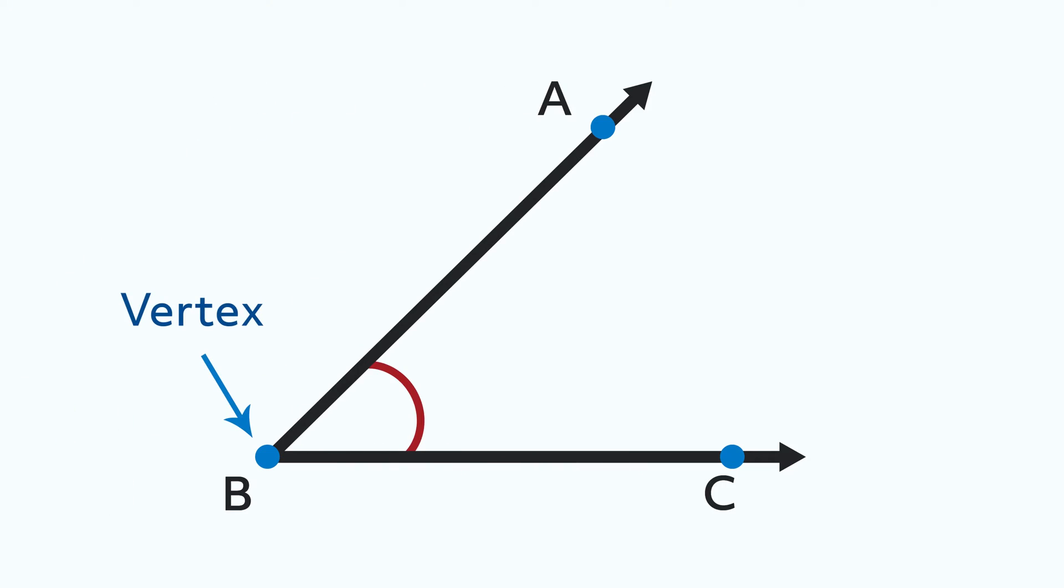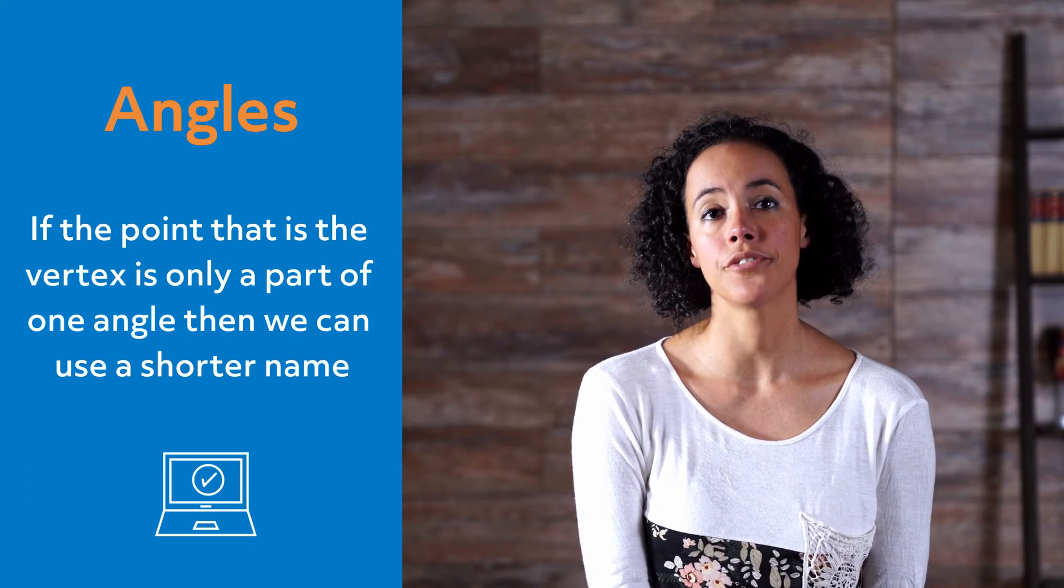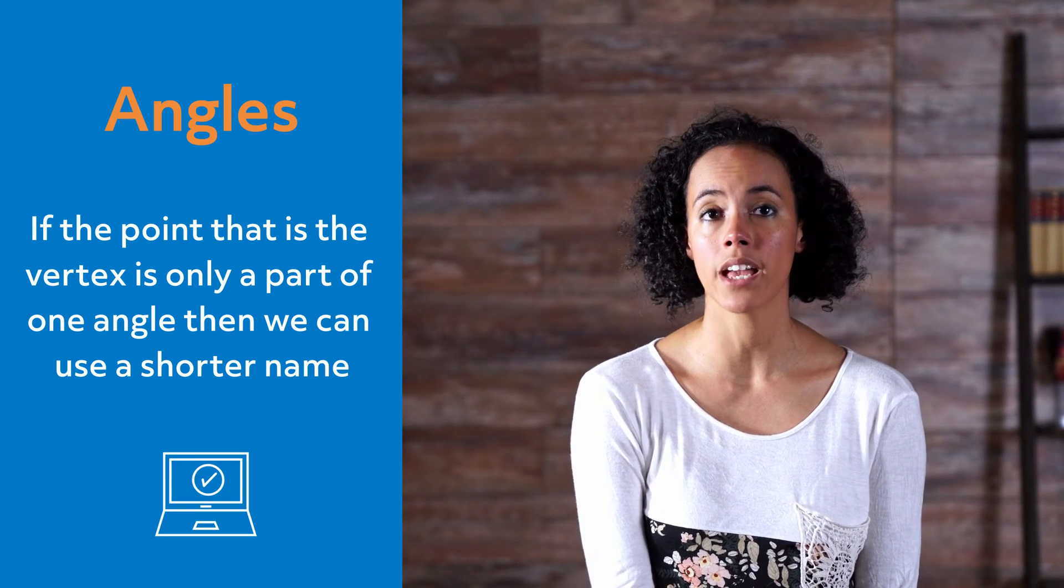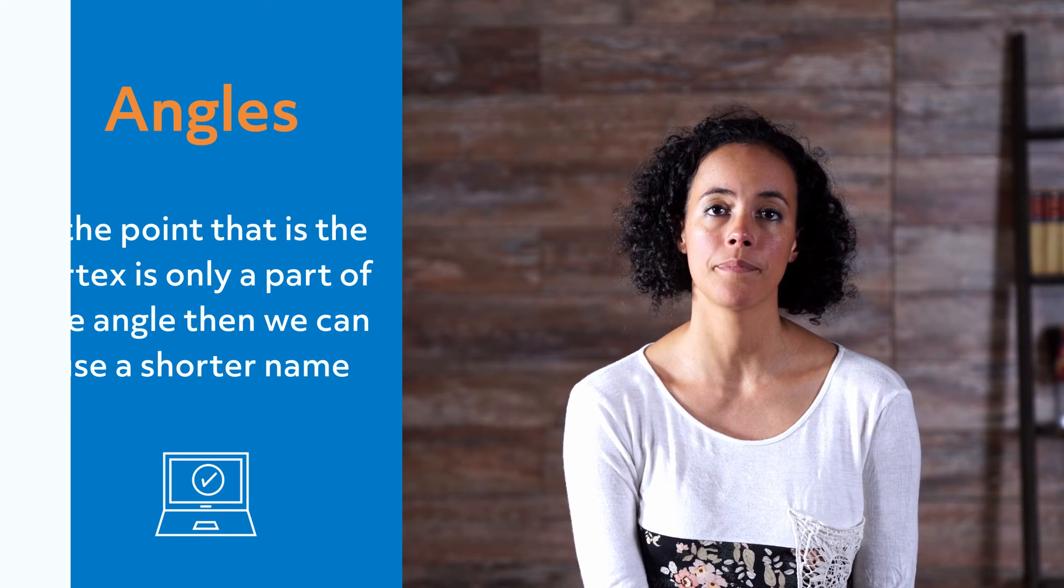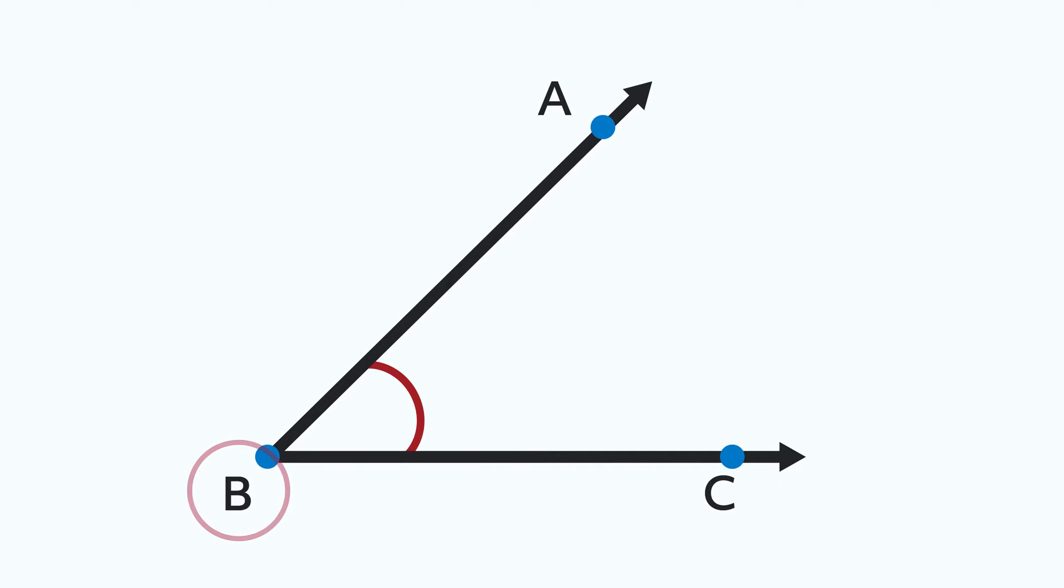Here, B is the vertex, so the B goes between the A and the C. We can actually call this angle CBA, and it is just as correct. If the point that is the vertex is only a part of one angle, then we can use a shorter name. In this case, we could also call this angle B.